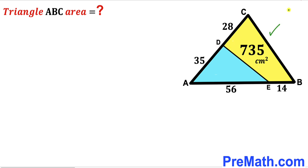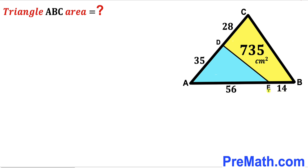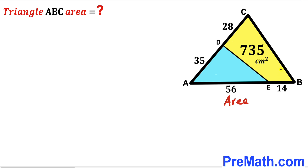The area of the yellow shaded quadrilateral has been given to us as 735 centimeter square. Moreover, segment AE length is 56 centimeter, segment BE length is 14 centimeter, segment AD length is 35 centimeter, and segment CD length is 28 centimeter. Our task is to calculate the area of the whole triangle ABC.